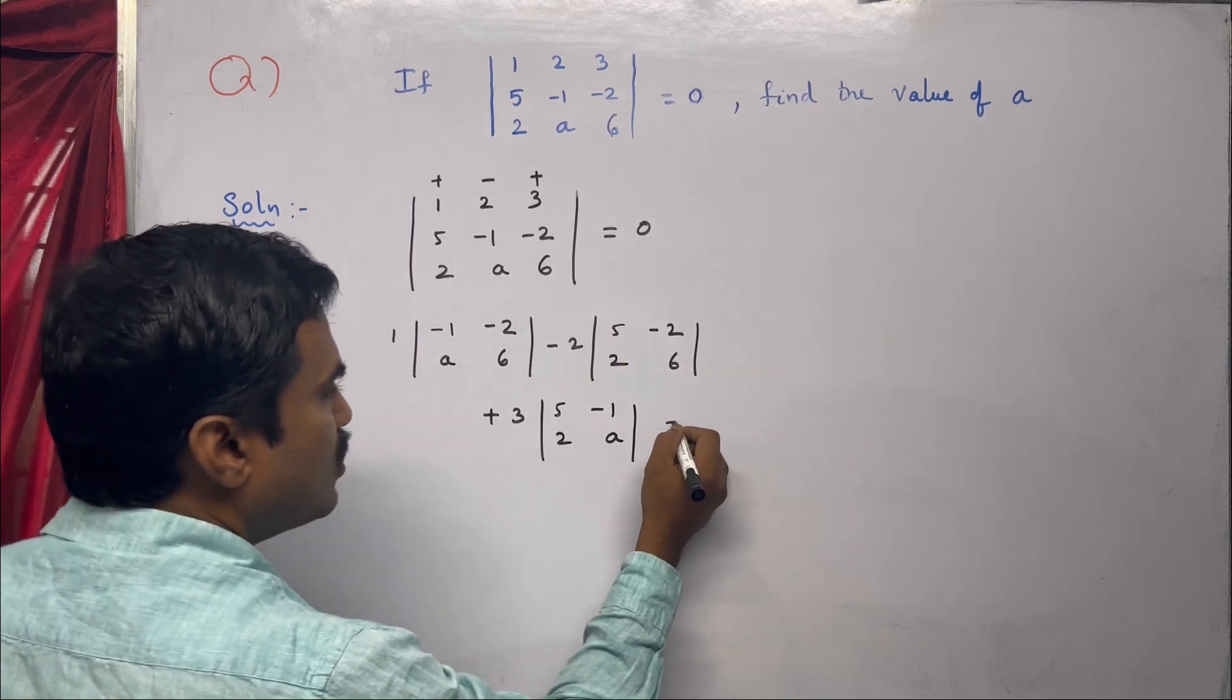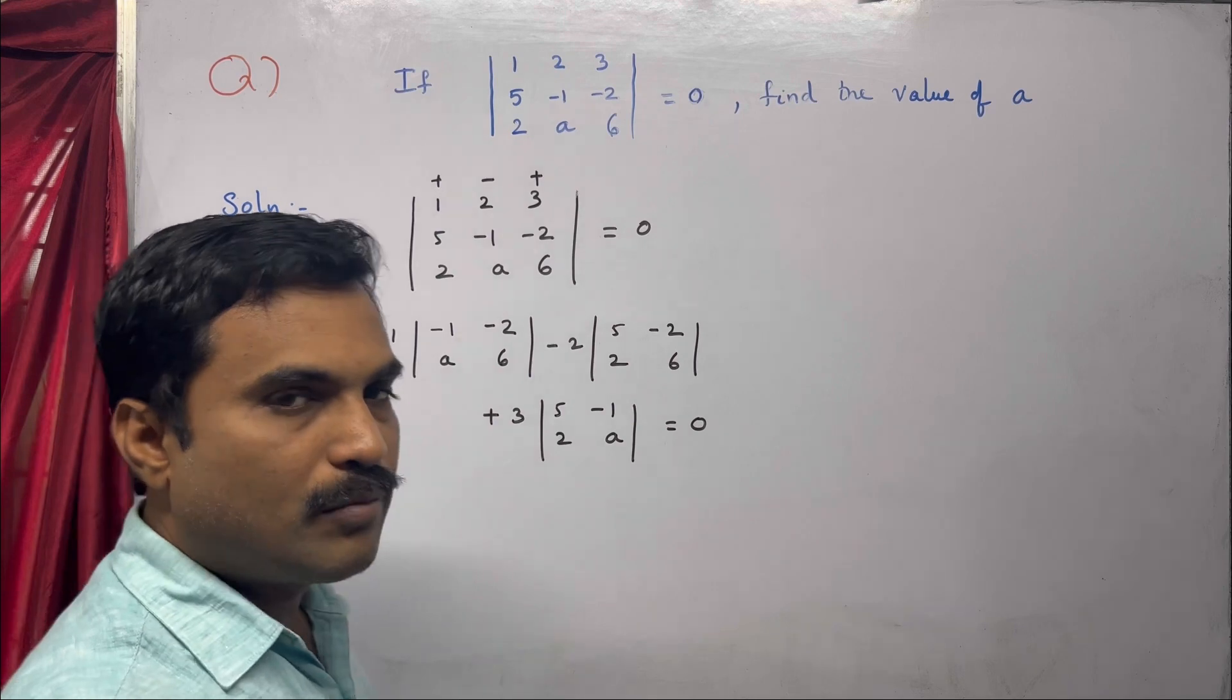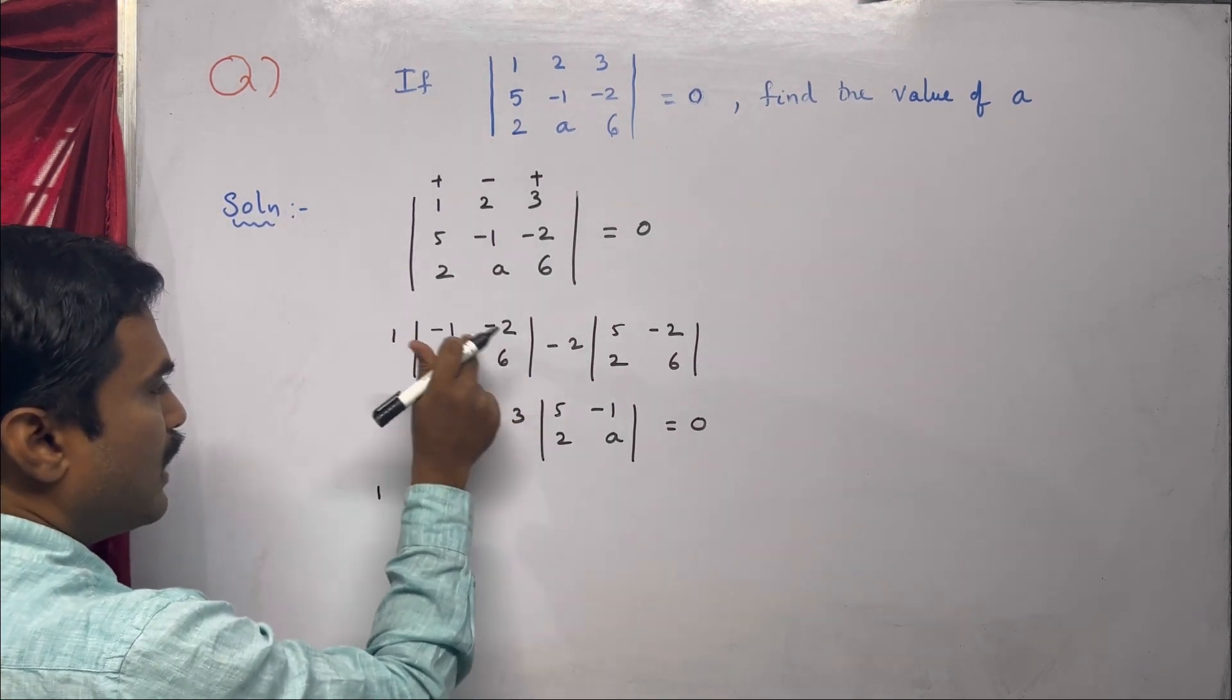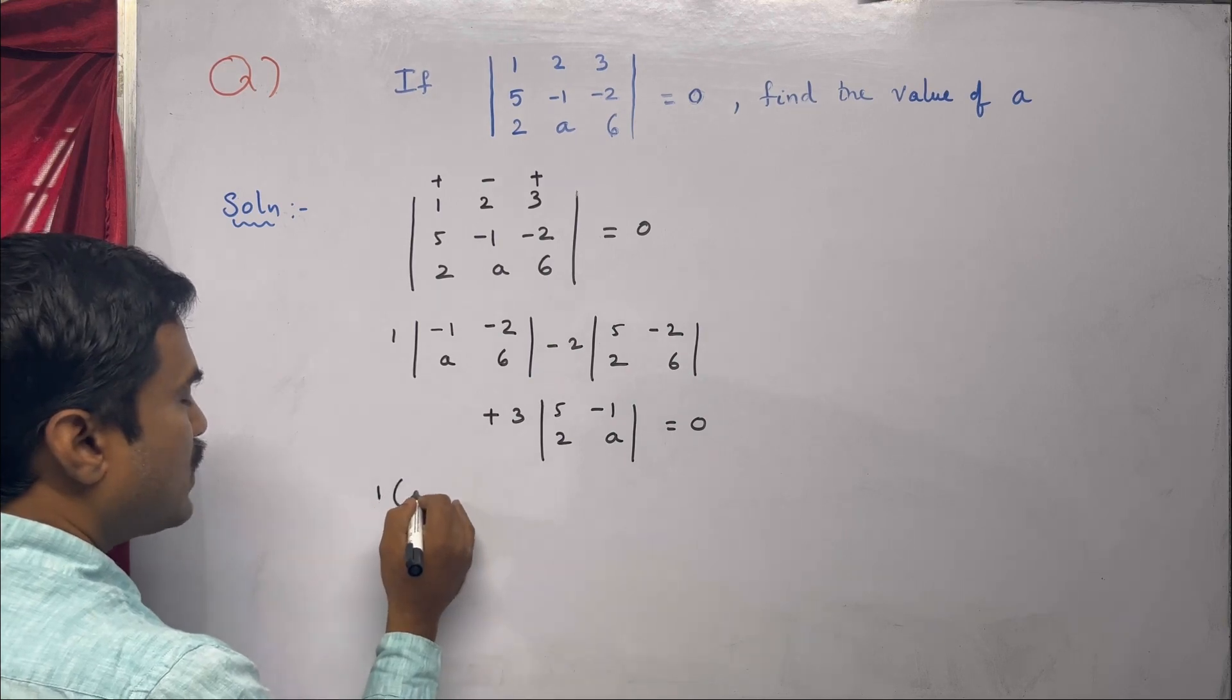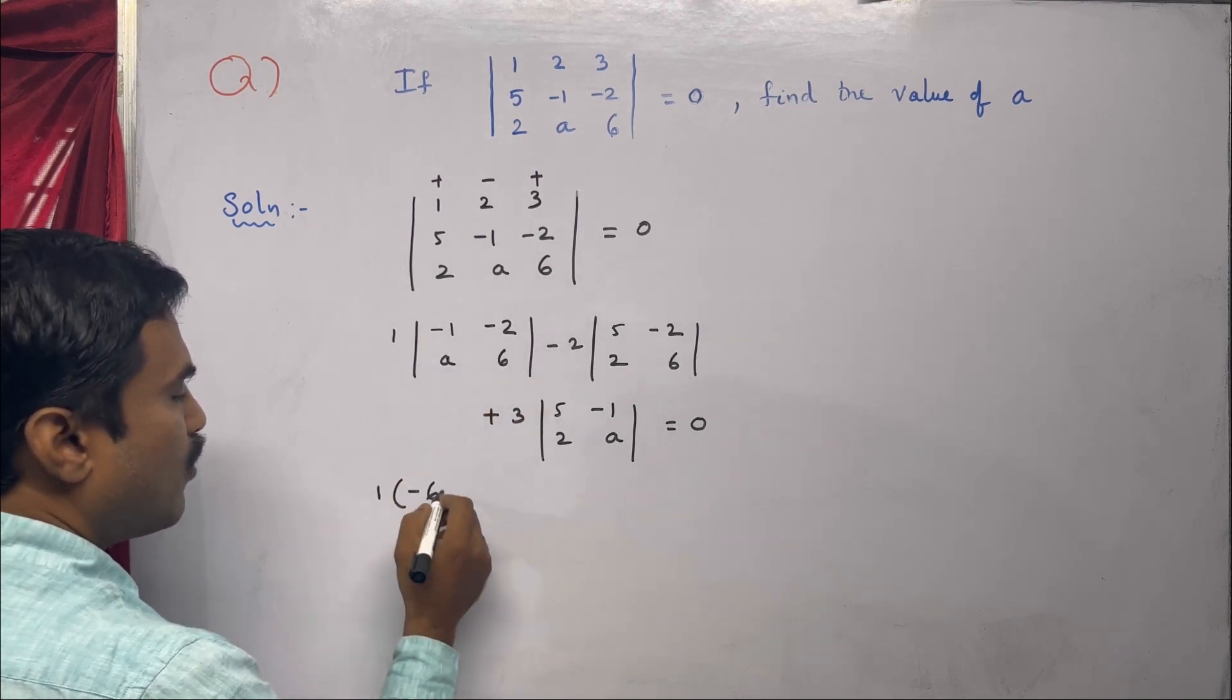Now we solve these 2x2 determinants one by one. First, 1 times: multiply the main diagonal elements, -1 times 6 equals -6, and the other diagonal is -2 times a. With the minus sign, we get -6 + 2a.